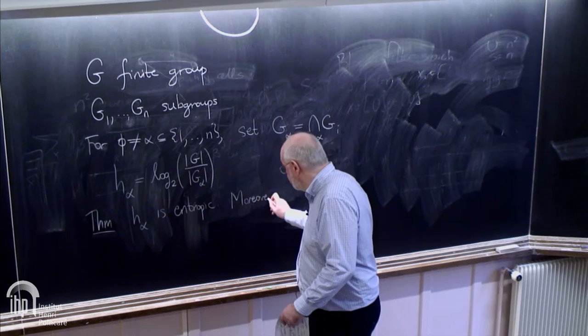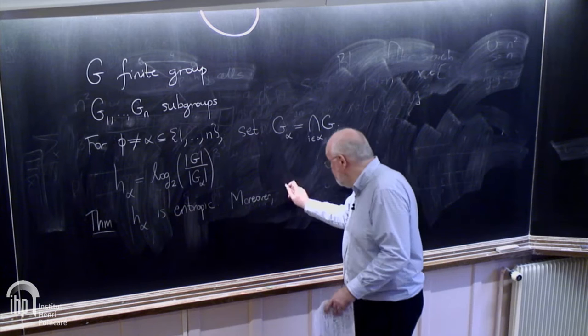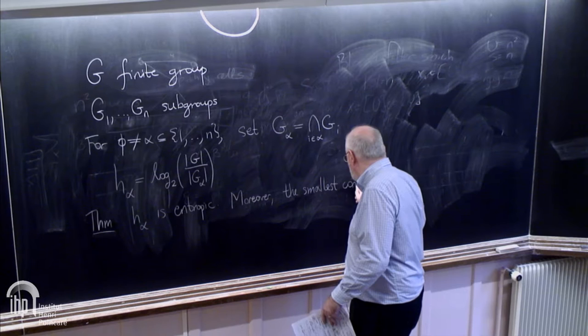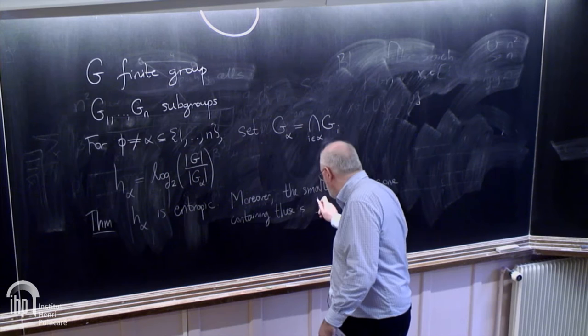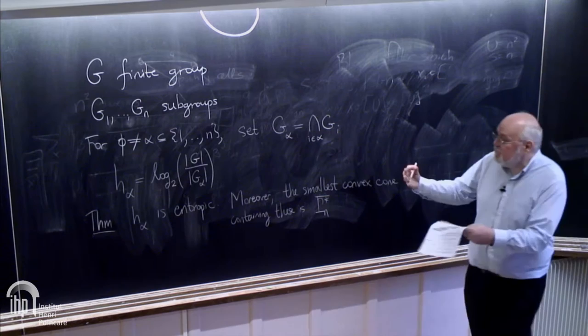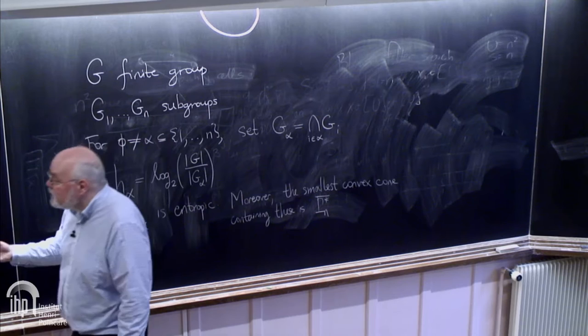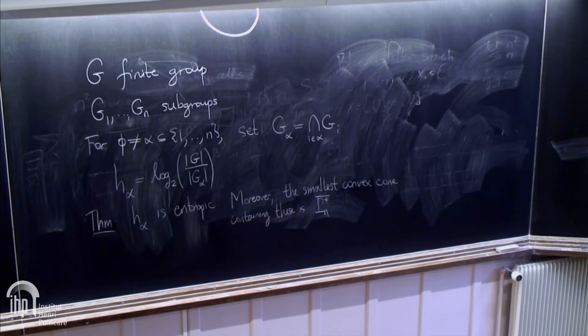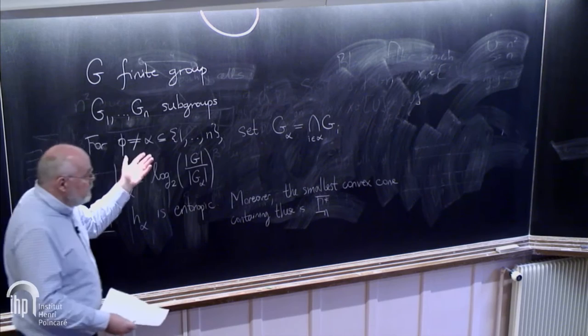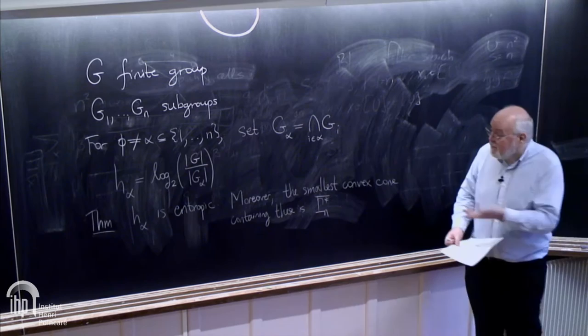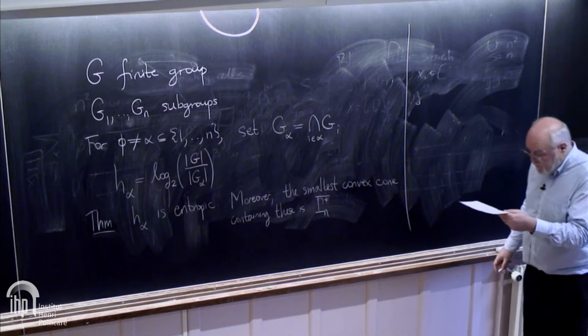But not just that—moreover, they generate all entropic points in the sense that the smallest convex cone containing these is gamma N star, maybe closure. They fill out all the entropic points. If you're interested in what information inequalities there are, you could study linear inequalities satisfied by these points instead, depending on whether you're a statistician, engineer, or group theorist.